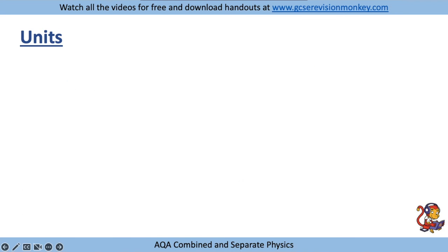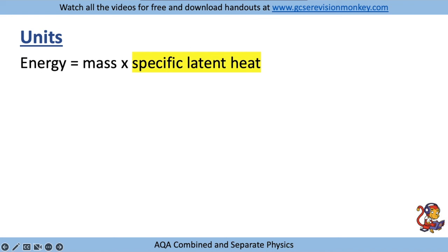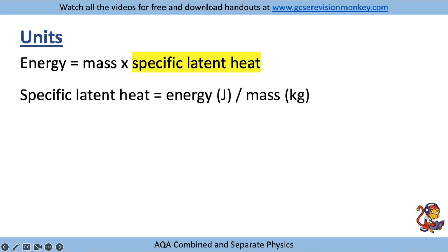The final one you can work out this way is specific latent heat. Rearranging the equation gives specific latent heat equals energy divided by mass. Energy is in joules and mass in kilograms, so the units are joules per kilogram. Those are the units you can work out using the equations if you forget them.